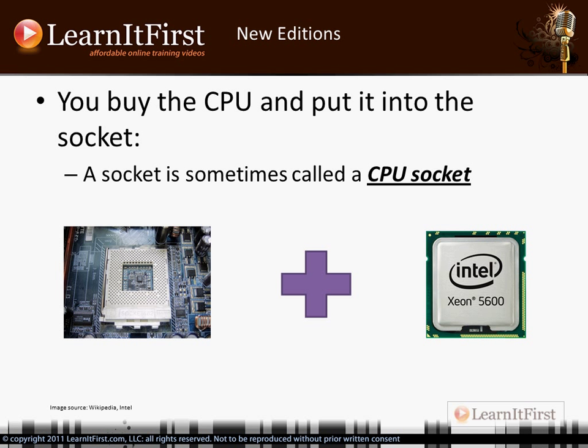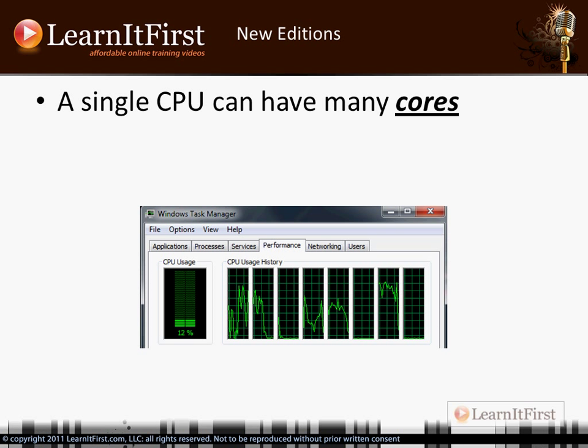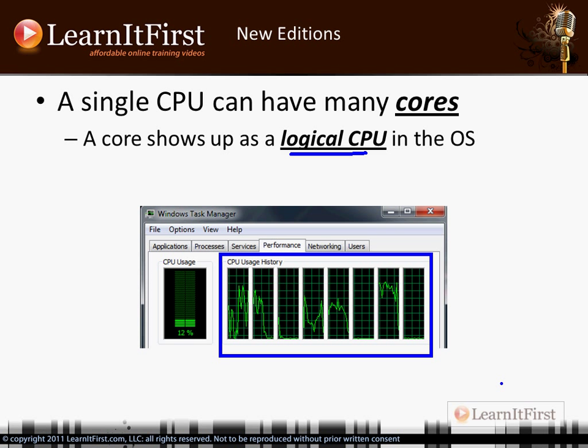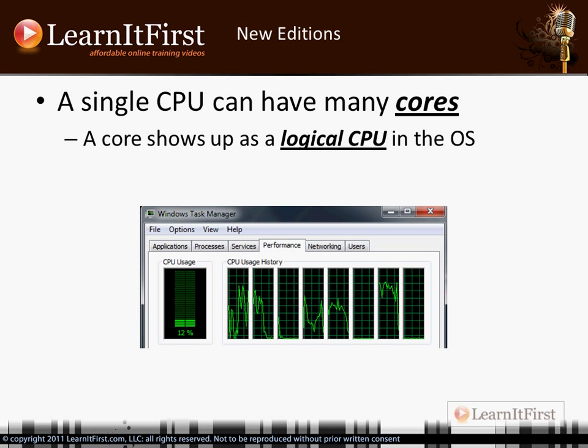Sometimes it's called a CPU socket. A single CPU can have many cores. So we buy that one Xeon 5600 series CPU, but really it might be an eight-way CPU — it might actually have eight cores. When we install it in the operating system, it shows up as logical CPUs. So it actually shows up as an eight-way system. We go to Task Manager — you can see a screenshot of that right there — and it shows eight CPUs. That's a core: a CPU can have many cores.